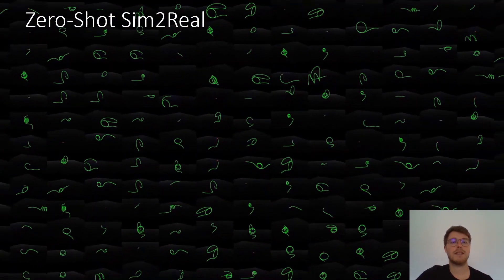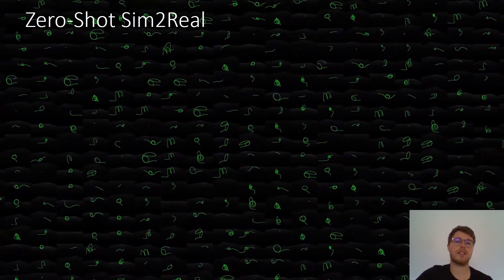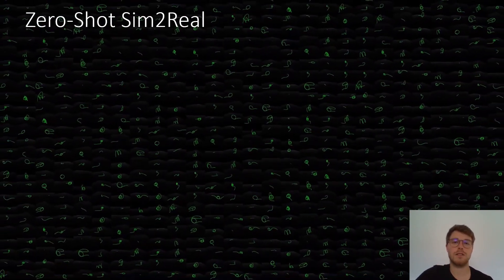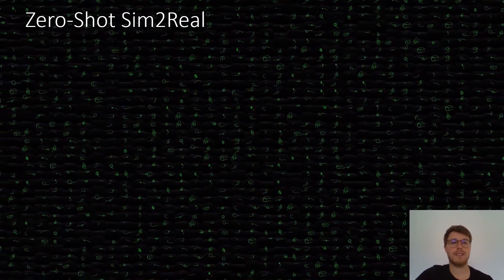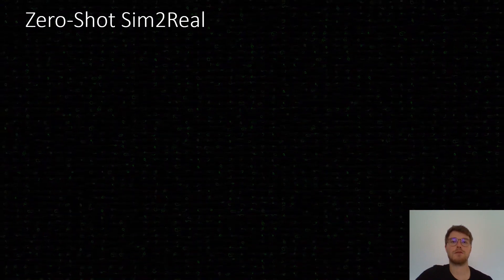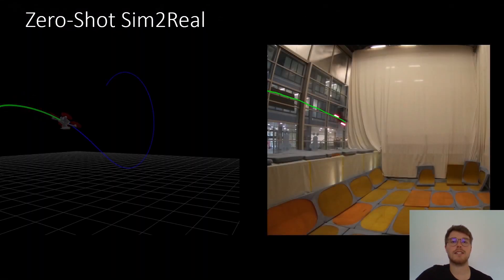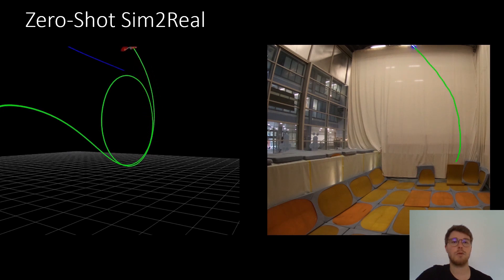Training is done by imitating a privileged expert operating on privileged information. In our project this privileged expert takes the form of an optimal controller that has access to perfect information about the platform state which is not available to the sensorimotor policy.